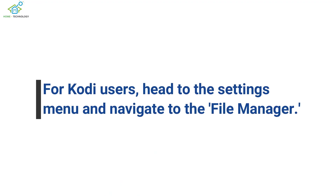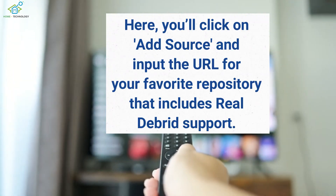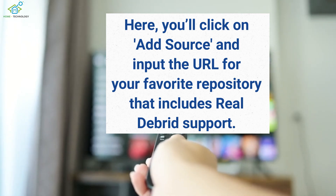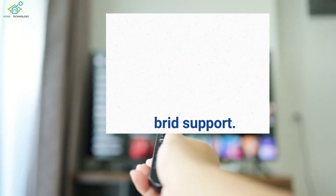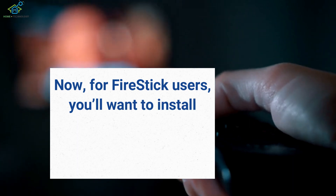For Kodi users, head to the Settings menu and navigate to the File Manager. Here, you'll click on Add Source and input the URL for your favorite repository that includes RealDebrid support. After that, return to the main menu, select Add-ons, and install the repository.